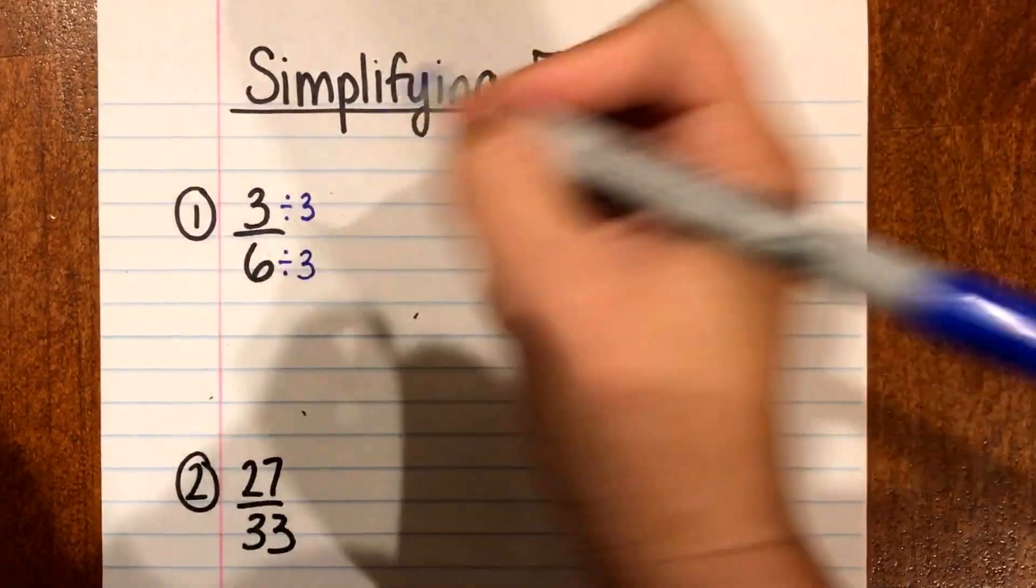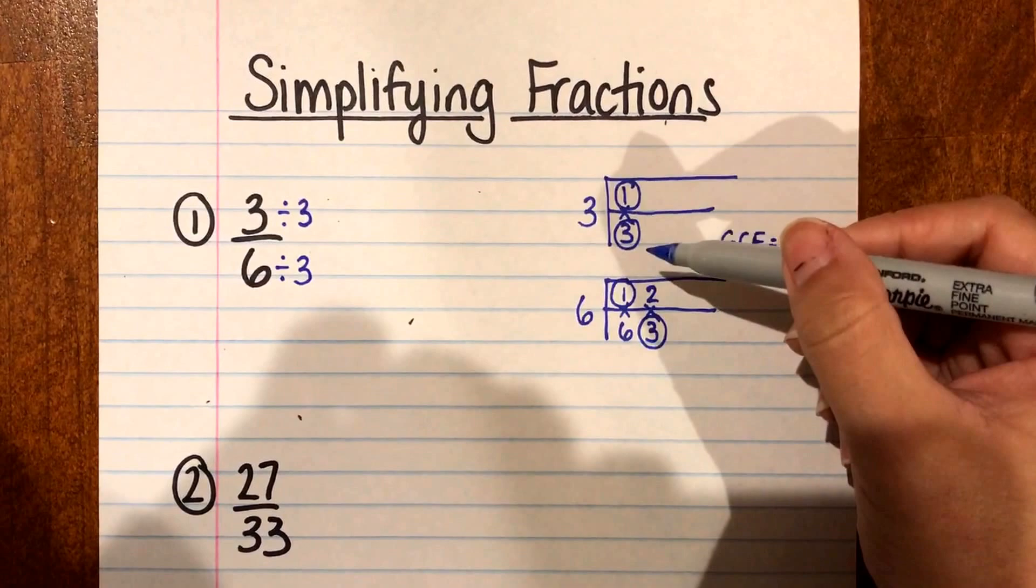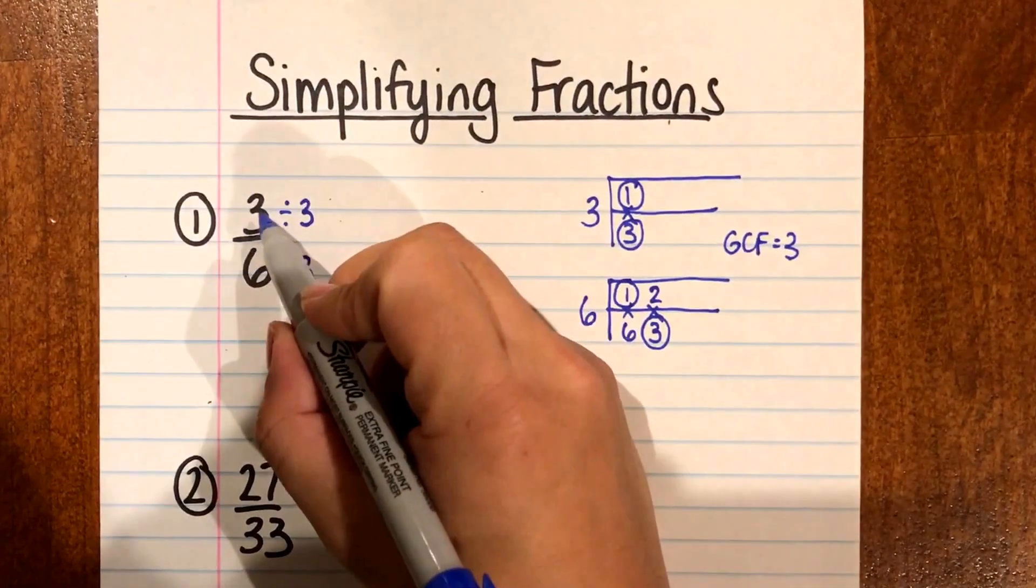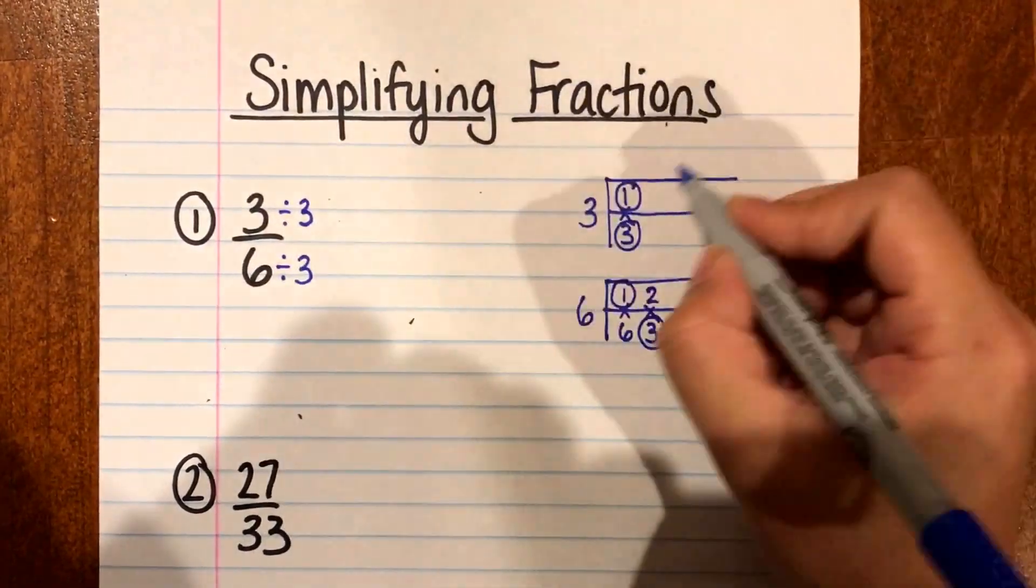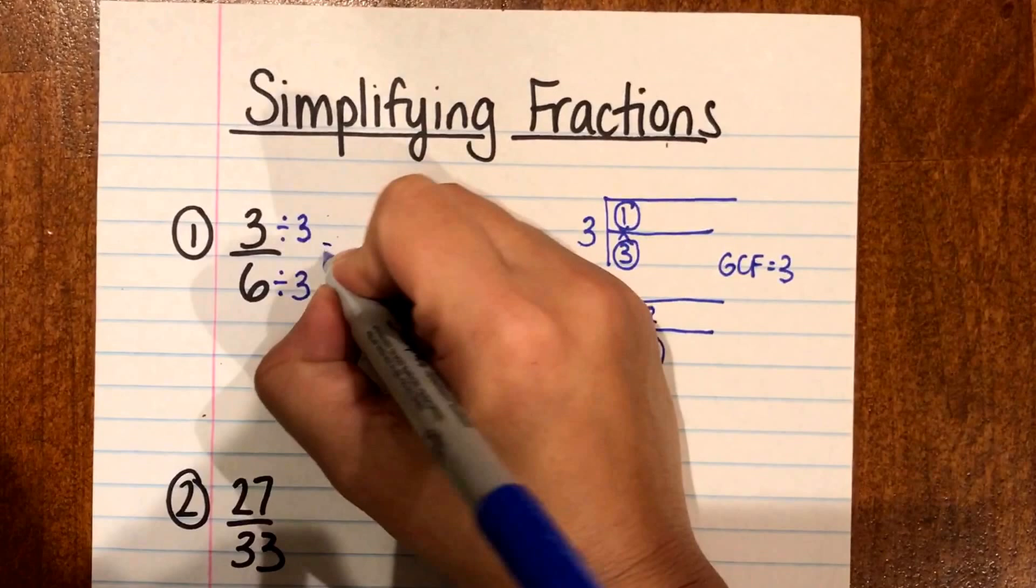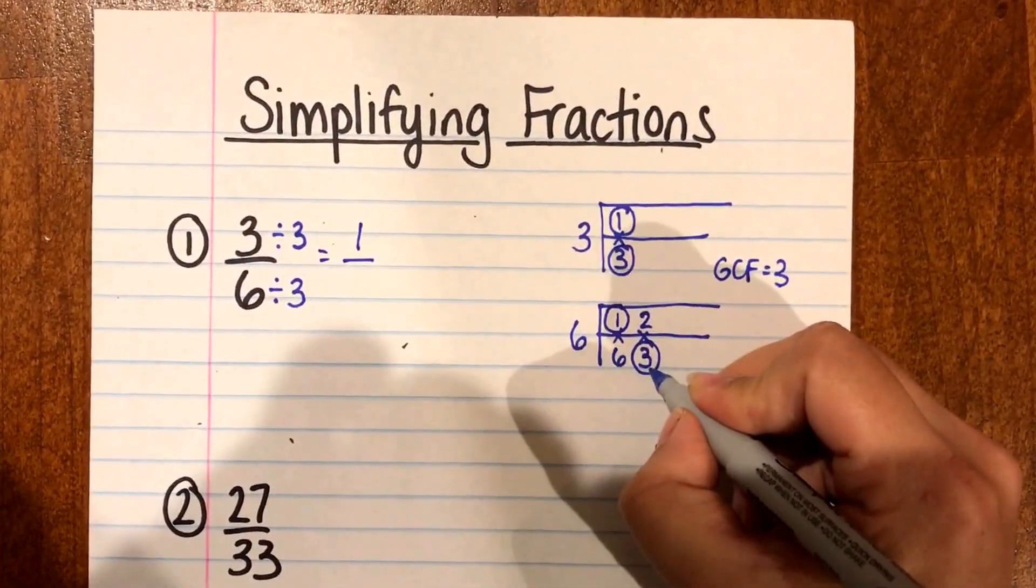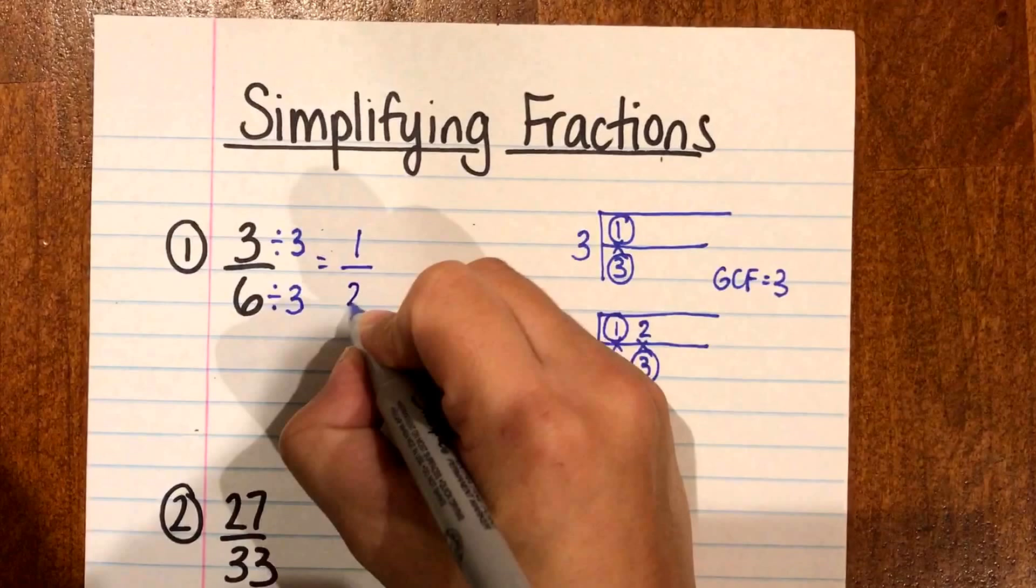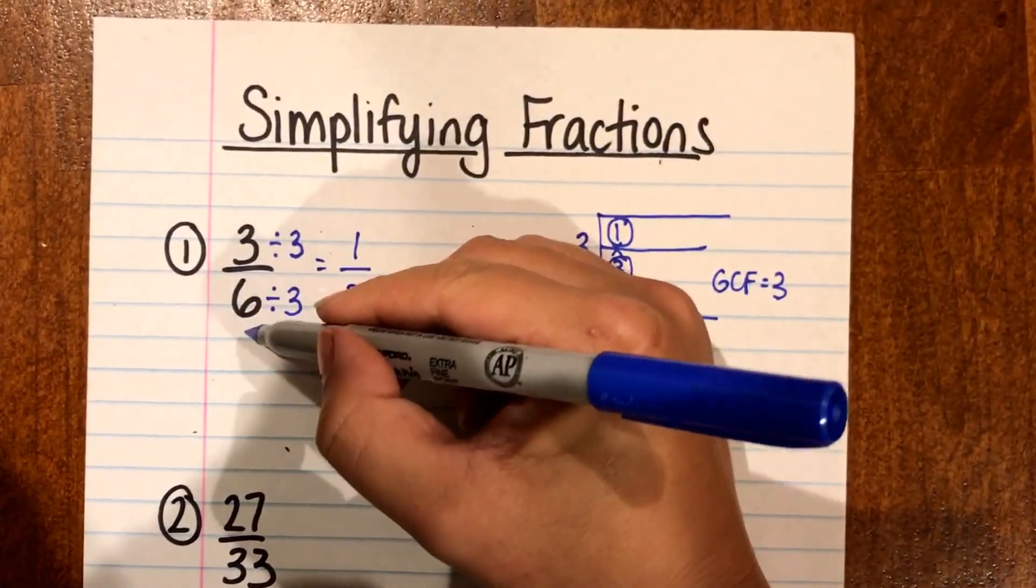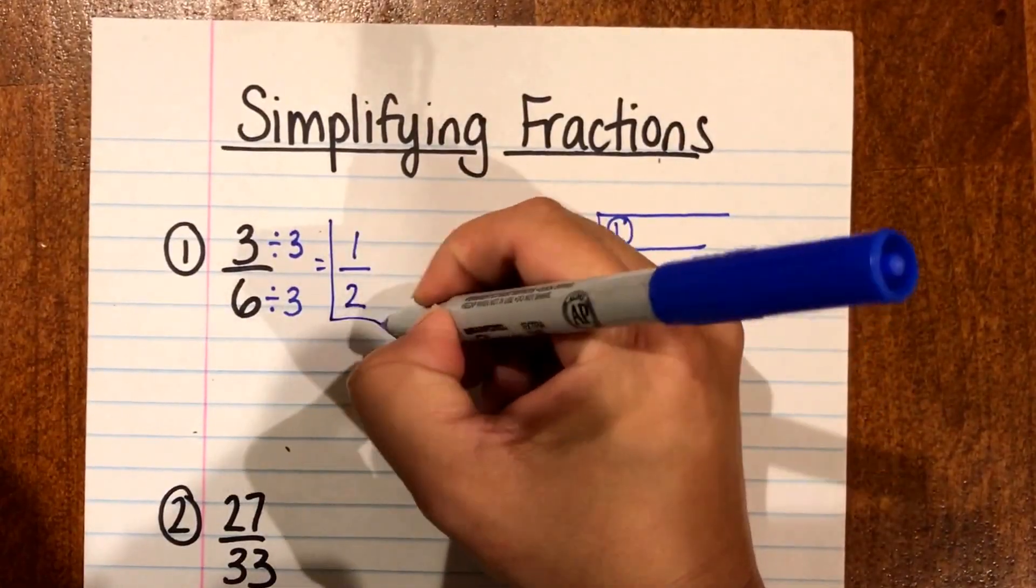So I like the F method because you can go back and see which factors match up. So for my numerator 3 divided by 3 I know is going to be 1 and 6 divided by 3 I know is going to be 2. So 3/6 simplified is 1/2.